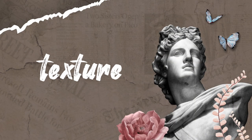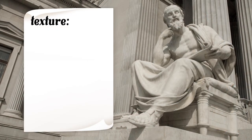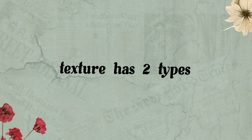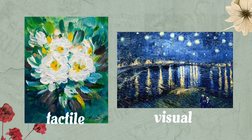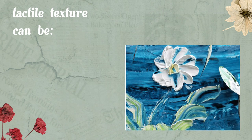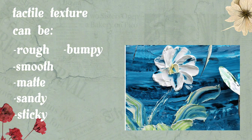Texture is one of the elements of painting. It refers to how a surface looks and feels. It is used to create the illusion of painting details so that the observer may actually feel the texture of the artwork just by looking at it. Texture has two types: tactile texture and visual texture. With tactile texture, you can feel the actual surface when you touch it — it can be rough, smooth, matte, sandy, sticky, bumpy, and wrinkled.